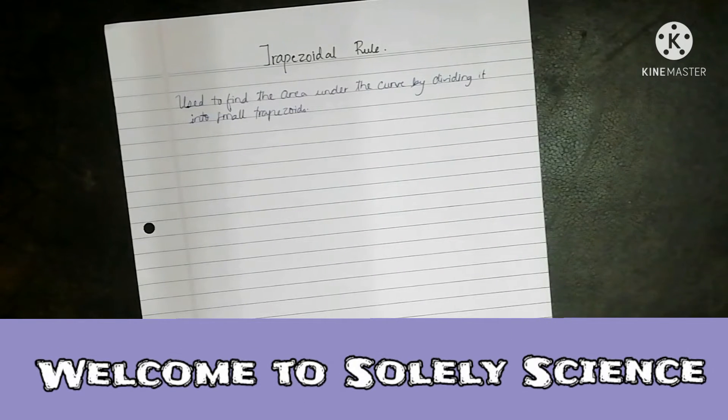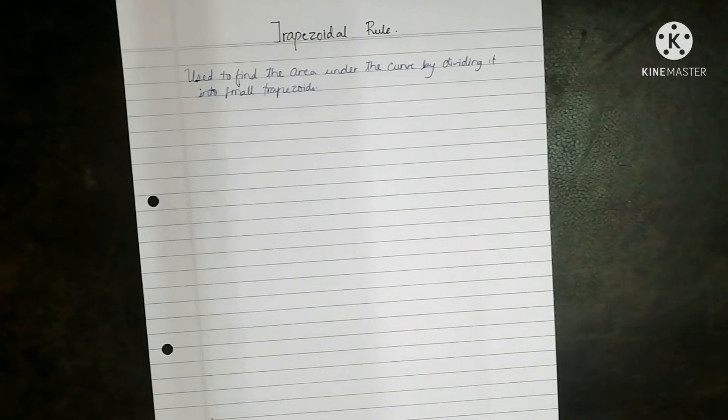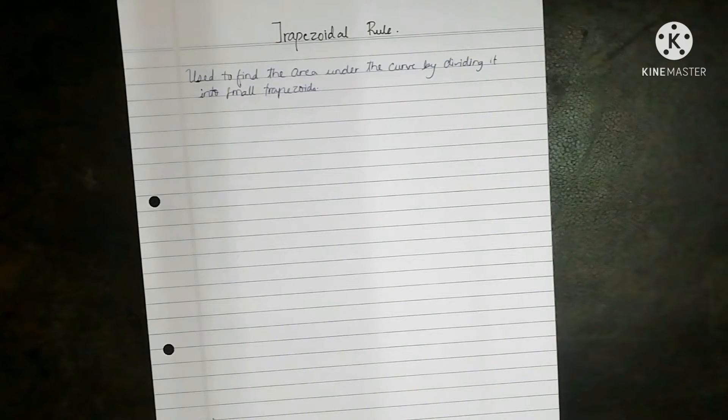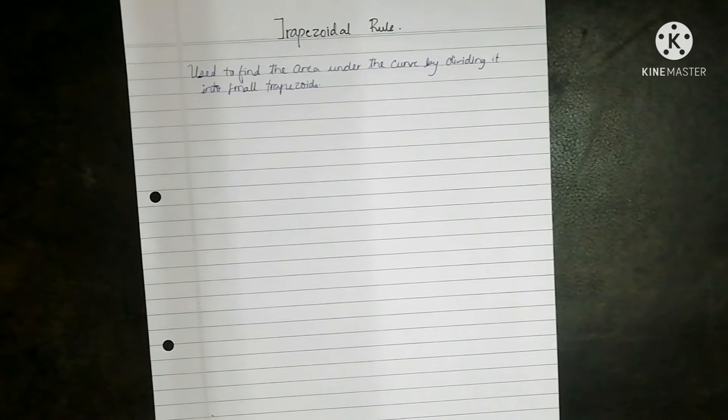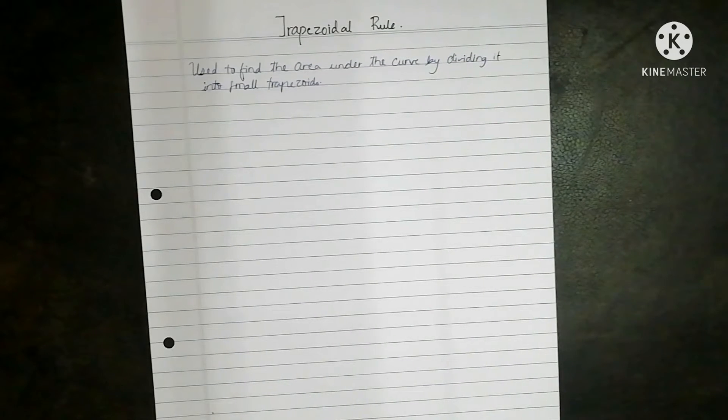We will be talking about a very important topic from numerical methods and that is trapezoidal rule. The trapezoidal rule is used to find the area under the curve by dividing it into small trapezoids.